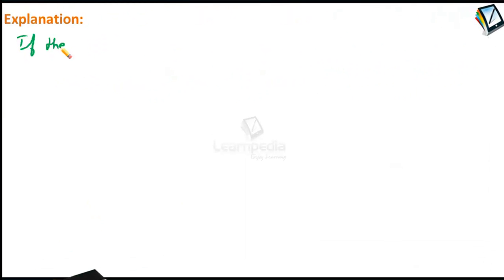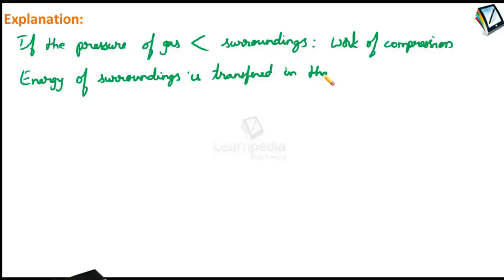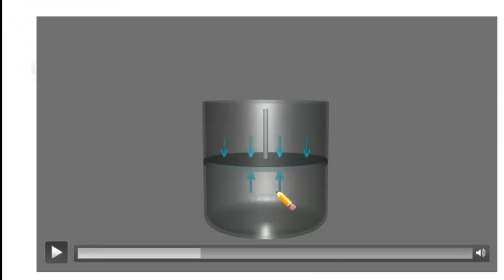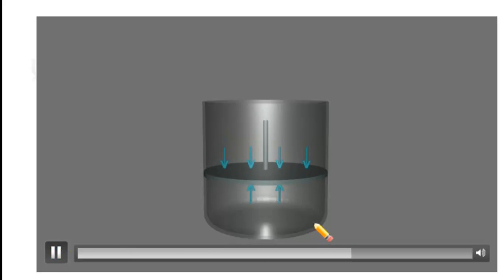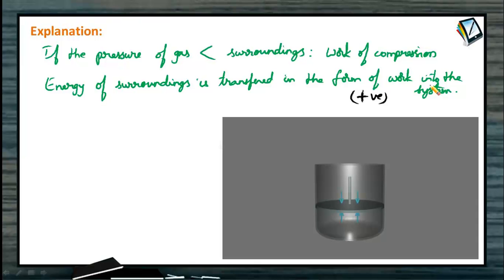In the second case, if the pressure of the gas is smaller than that of the surroundings, then work of compression is done on the gaseous system by the surroundings. The energy of the surroundings is transferred in the form of work into the system, and according to IUPAC convention, this work of compression is assigned a positive value. The piston will move downward until the pressure of the gas becomes equal to the pressure of the surroundings.